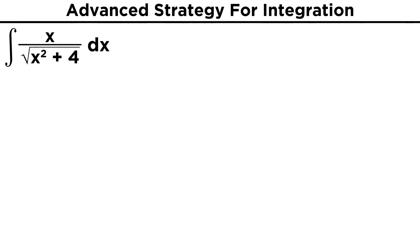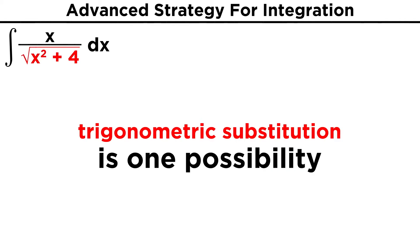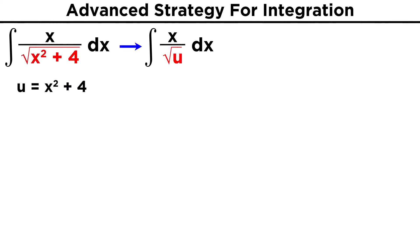Let's give this first one a shot: the integral of x over root x squared plus four dx. We immediately recognize that this is too complicated to be integrated directly, so we need to use one of our techniques. With this example, we will learn right away that sometimes multiple techniques could be applied. We could be tempted to use trigonometric substitution, noticing that this radical expression allows it. We absolutely can use this technique. However, we might also notice that direct substitution will be much easier, since we see that there is an expression for which a form of its derivative is also present. If we take u to equal x squared plus four, this part becomes root u, and then du will equal two x dx. We have x dx, so that's no problem.